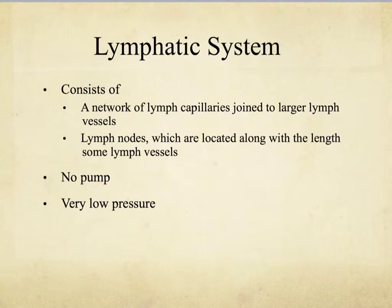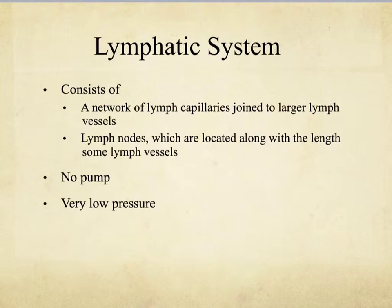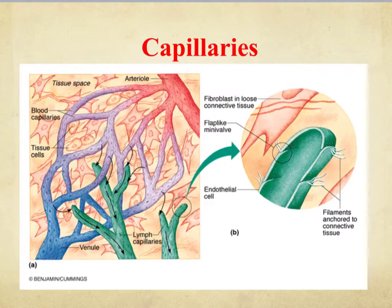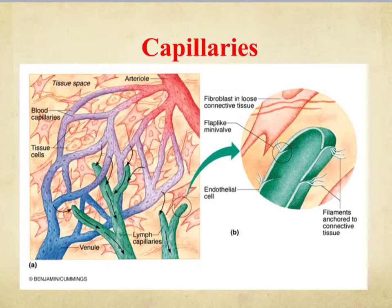The lymphatic system consists of a network of lymph capillaries joined into larger lymph vessels and lymph nodes located along the length of the lymph vessels. It operates at low pressure and does not need a pump for movement. Lymph vessels are visible in diagrams near blood capillaries, and the system absorbs material from the surrounding tissue into the lymph.